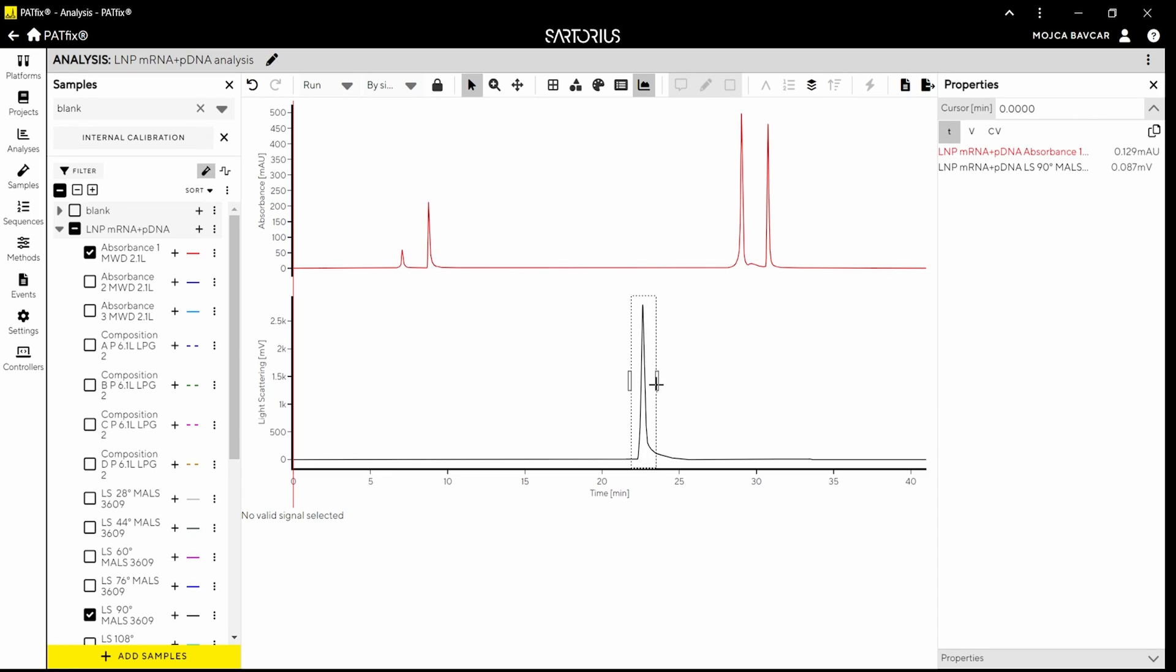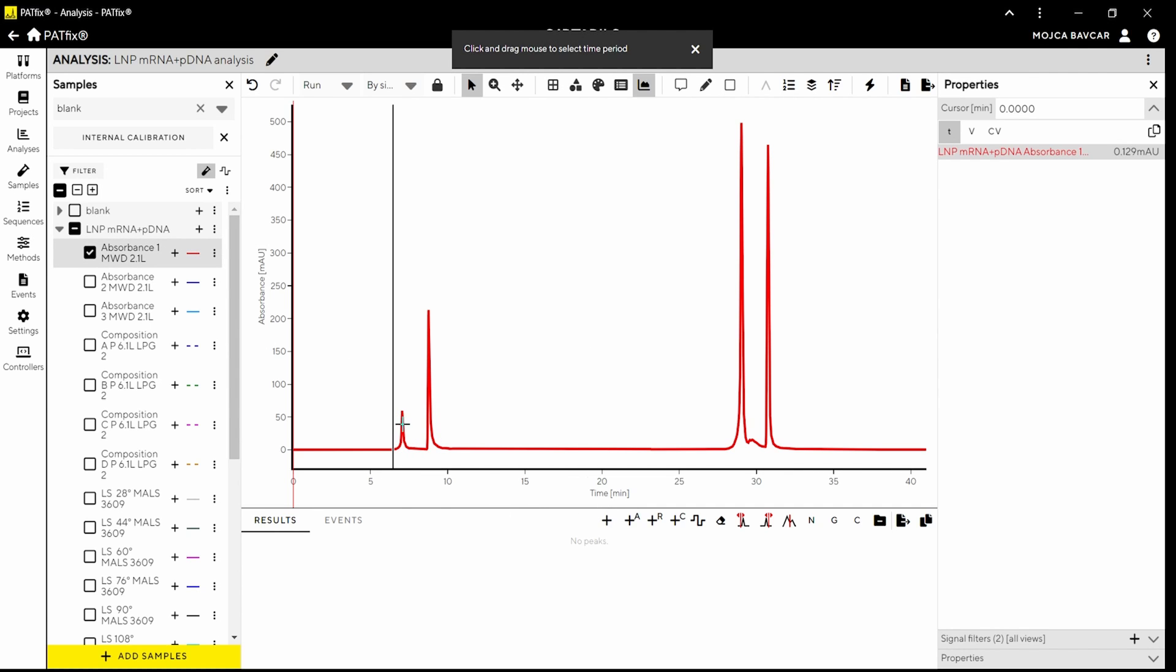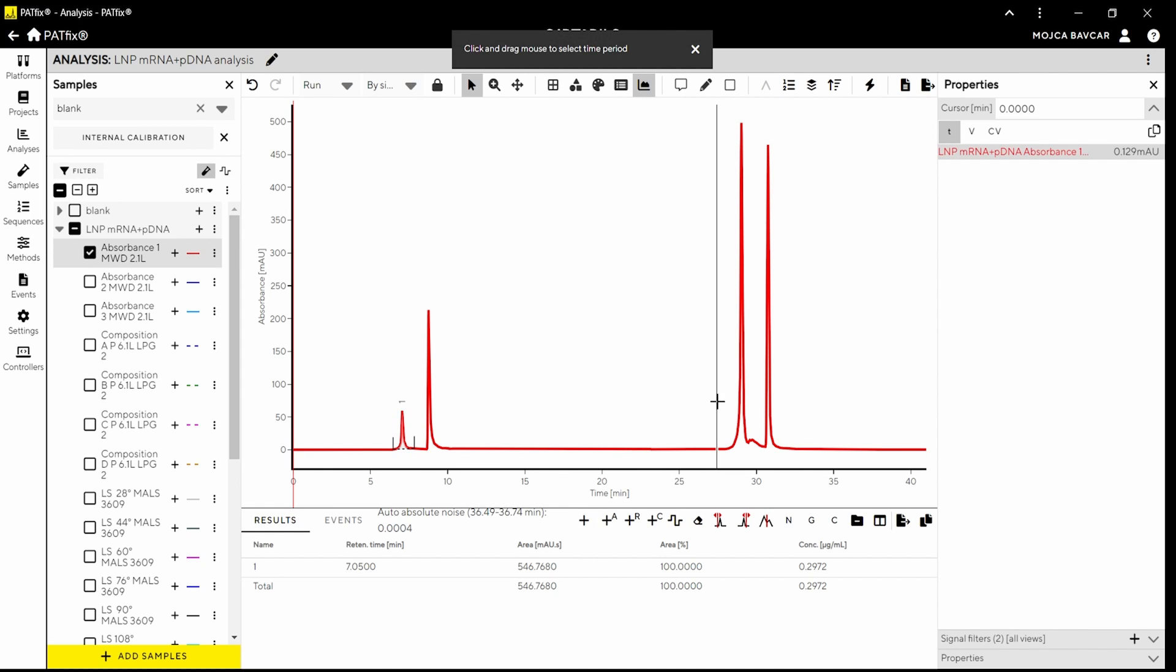The light scattering signal is comparable to the previous example, enabling the estimation of LMP size. However, the absorbent signal displays additional peaks. Due to the presence of two nucleic acids in the sample, namely mRNA and pDNA, two distinct peaks are observed in both the non-encapsulated and encapsulated analyses. This way, encapsulation efficiencies for both nucleic acids can be determined independently.